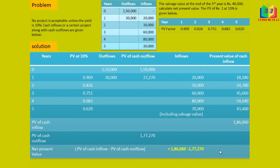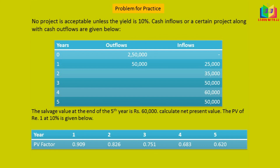Subtracting gives us 8,790, which is the net present value. This project is preferable and acceptable because the net present value is a positive figure. If it is positive, we can accept the project. I hope you can calculate the present value of cash outflows and inflows, and now know how to treat salvage value. I have given a small practice problem — work it out and comment the answer, as it is similar to the problem we discussed.